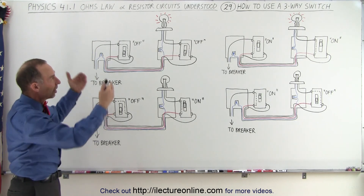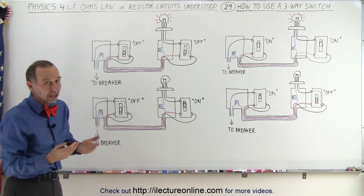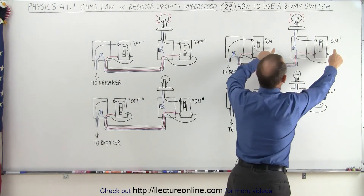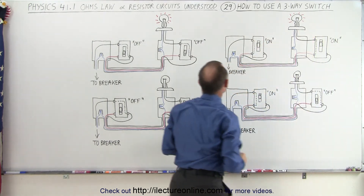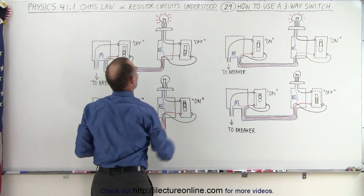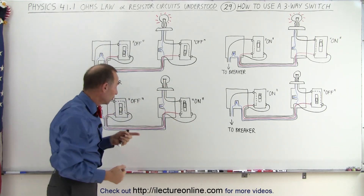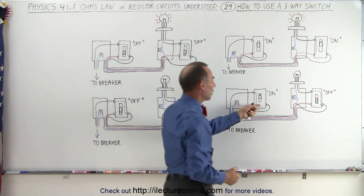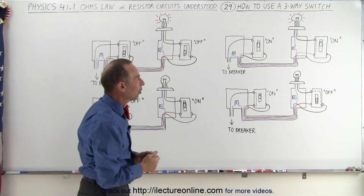Let's see why in some cases the light bulb will be lit and in other cases it will not. When both switches are in the on position — pushed upward — the light bulb will light. When both switches are pushed to the downward position, the light bulb will also light. But if the switches are in opposite positions — this one off and this one on, or this one on and this one off — the light bulb will not light.